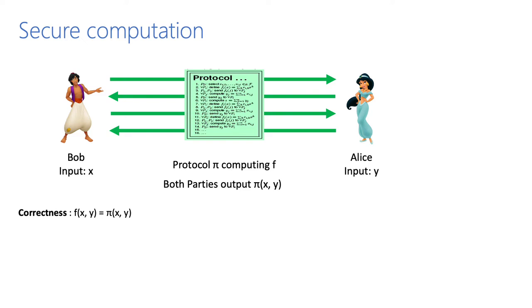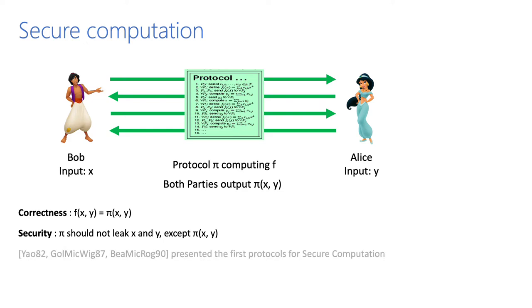The protocol should be correct — that is, the function output should be the same as the protocol output. And the protocol should be secure — that is, the protocol should not leak anything about the private inputs besides the output.